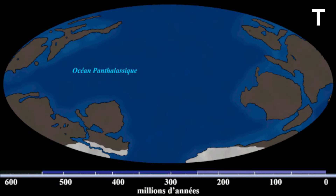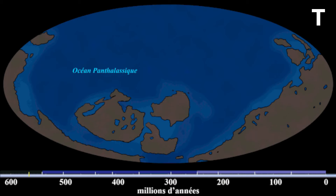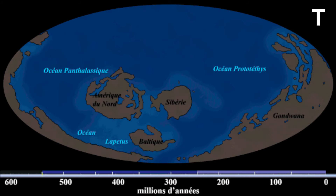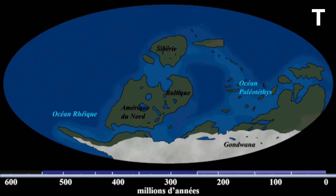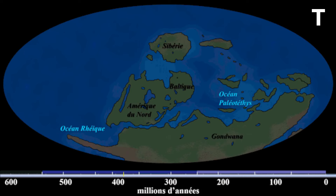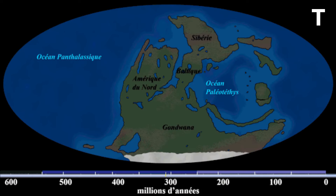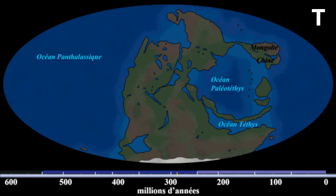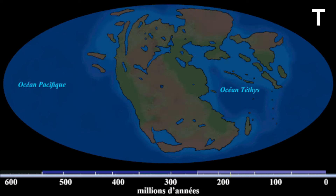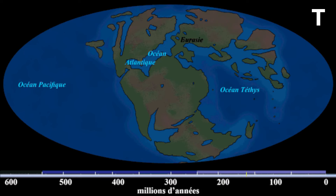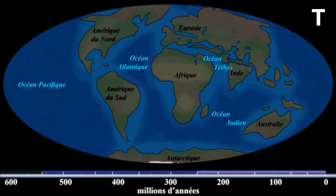Moreover, the movement of tectonic plates has sculpted and reshaped Earth's land masses over billions of years. Imagine continents drifting across the globe, coming together, breaking apart, and then reassembling like pieces of a colossal jigsaw puzzle. Throughout Earth's history, supercontinents like Pangaea have formed and fragmented, profoundly influencing the planet's climate, ecosystems, and the distribution of life.